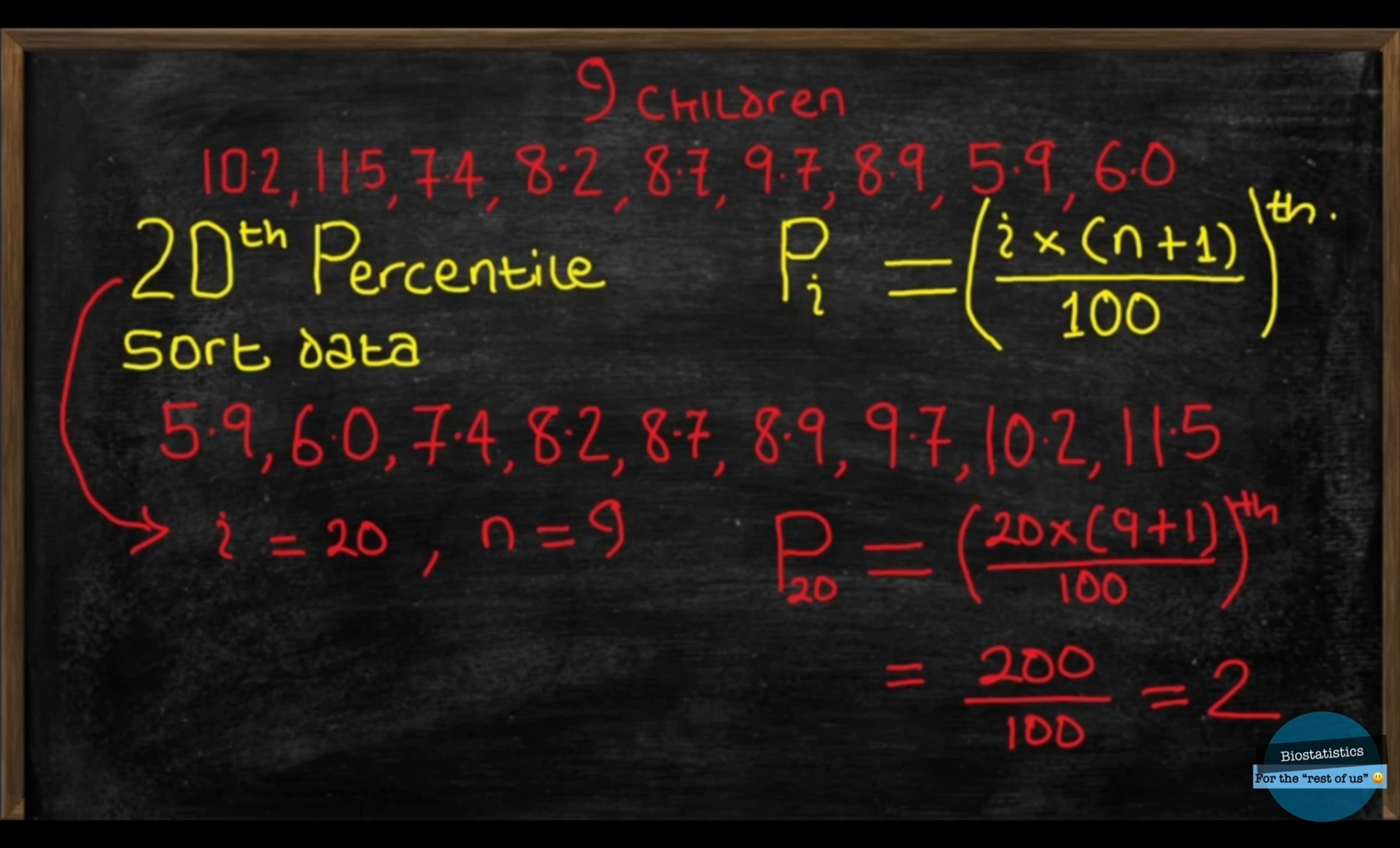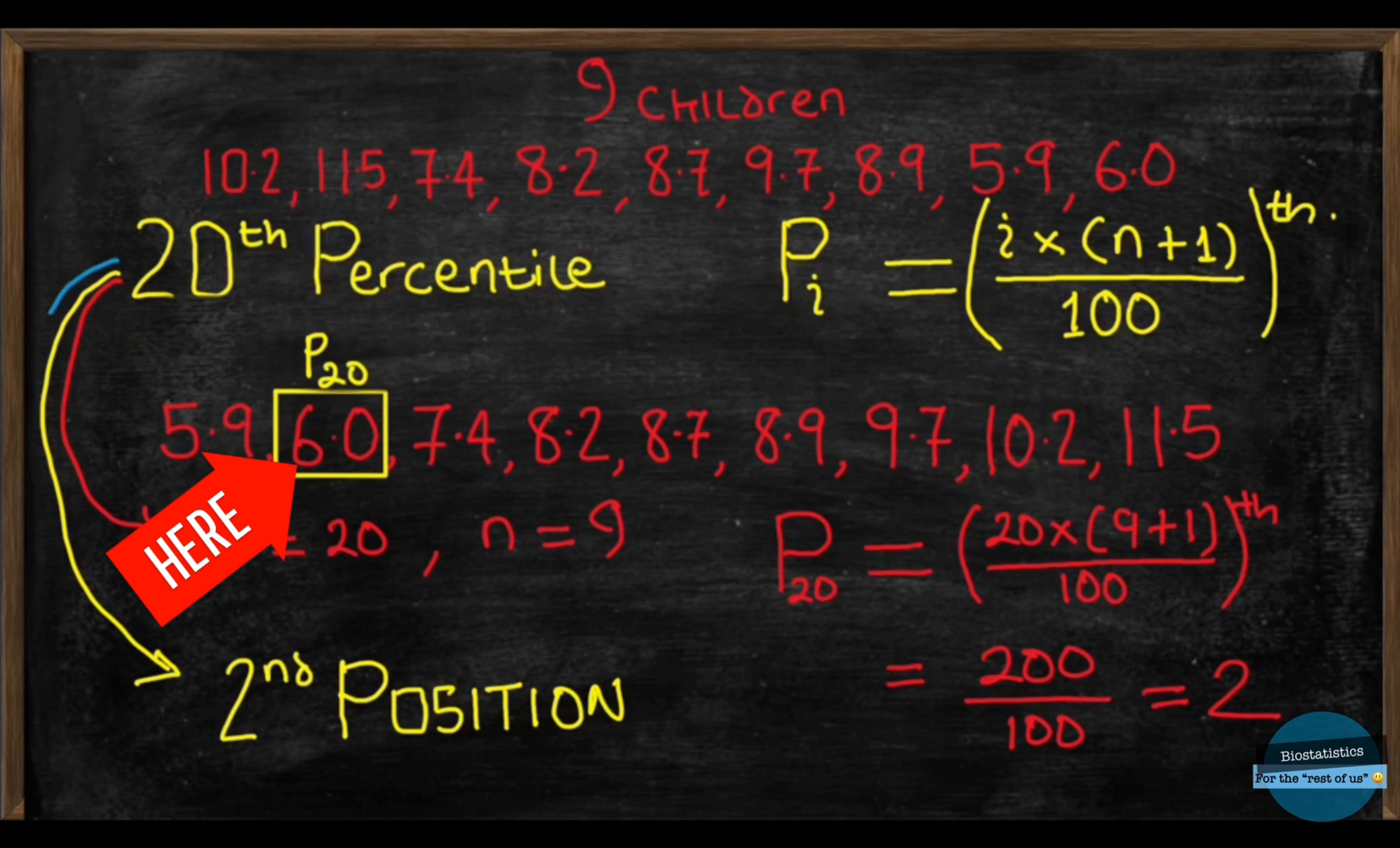So, our 20th percentile value lies in the second position. Now, looking at our sorted data, our second position is here. So, our 20th percentile value is 60 kilograms. Awesome. Let's try another example.